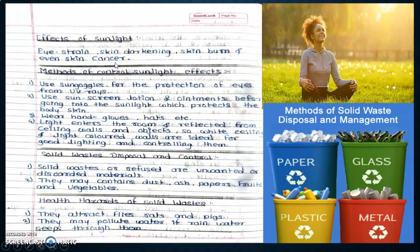Effects of sunlight include eye strain, skin darkening, skin burn, and even skin cancer. Methods of control: use of sunglasses for protection of eyes, use of sunscreen lotion and ointments before going into sunlight which protects the body skin, wear hand gloves and hats to avoid direct sunlight, and light entering the room reflected from light colored walls is ideal for good lighting and controlling them.